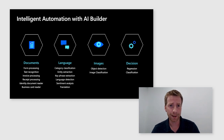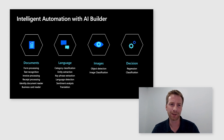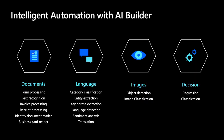Today's focus is on AI capabilities specifically. AI Builder allows you to automate intelligent processes across four different types of scenarios. The first one is Documents, which allows you to extract and process content from multiple different document types, such as invoices, receipts, forms, or identity documents.